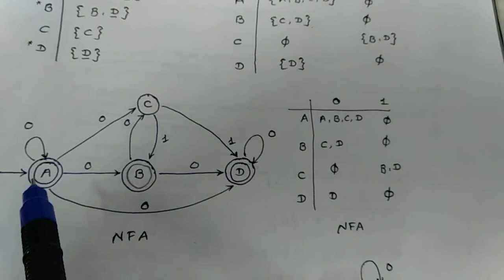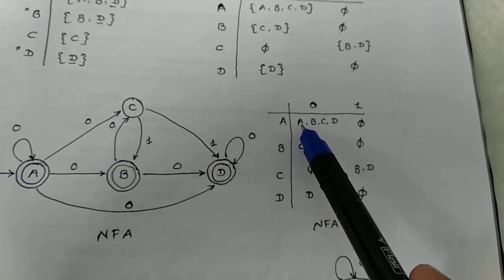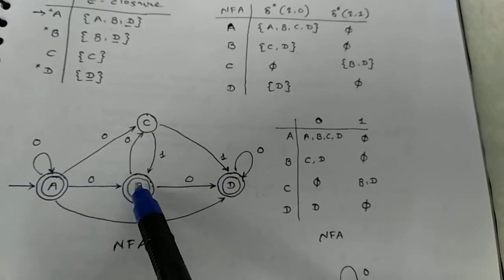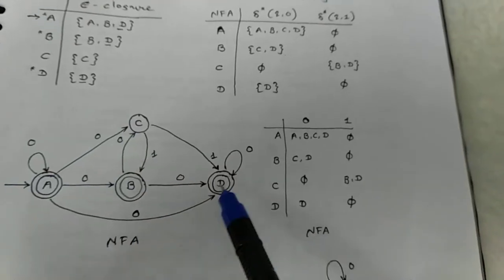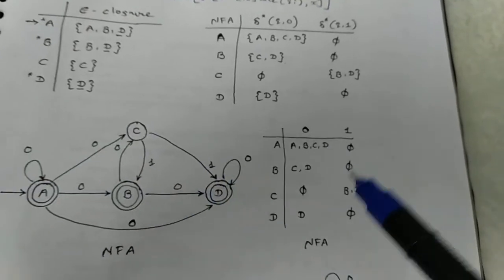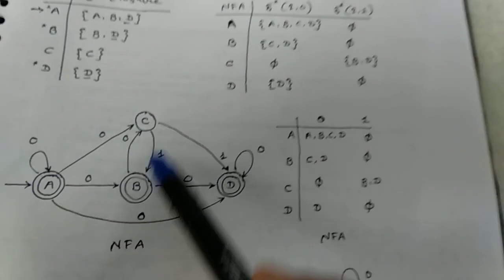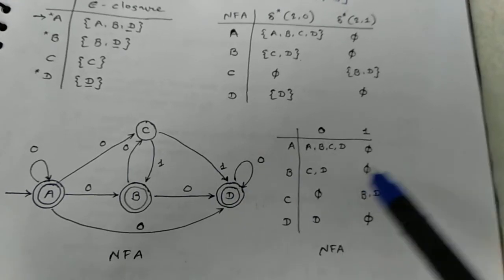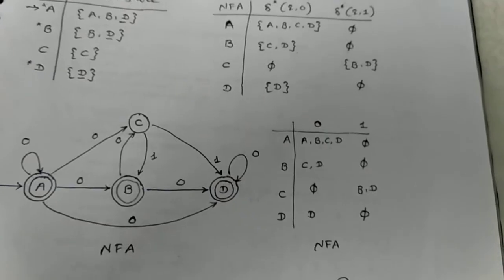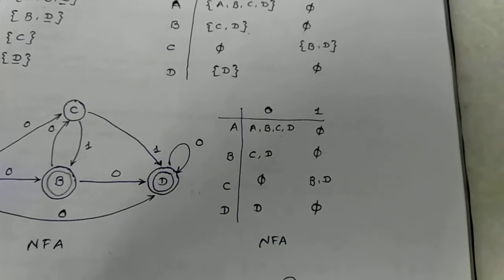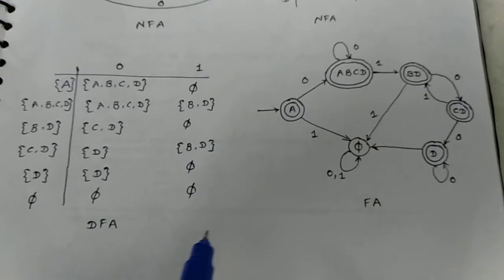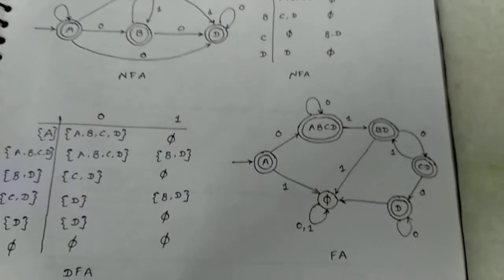A is the starting state. A to 0 reaches states A, B, C and D — so draw transitions A→0→A, A→0→B, A→0→C, and A→0→D. Then B to 0 gives C and B to 0 gives D. Note that epsilon/null transitions are not considered in NFA. From this NFA, if you want to draw the DFA, convert it into its equivalent FA. You already know how to convert NFA into DFA.